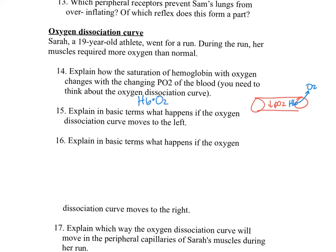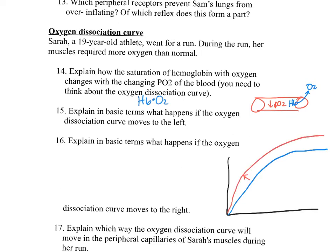Question fifteen: explain in basic terms what happens if the oxygen dissociation curve moves to the left. If the oxygen dissociation curve moves to the left, it means that hemoglobin has a higher affinity for oxygen and is therefore less likely to dissociate from the oxygen it is carrying, even in blood with a lower PO2.